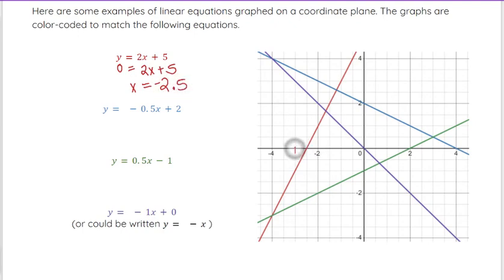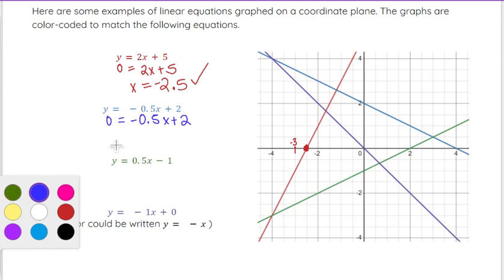And you'll notice, so this right here is negative 3. So the point where the red graph crosses the X axis is negative 2.5, which matches what you get when you solve algebraically. If I were to solve the blue one, 0 equals negative 0.5X plus 2, by subtracting 2 over and dividing by negative 0.5, you would end up with X equals 4, which is exactly where that blue graph crosses the X axis.